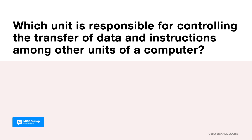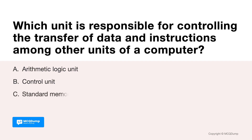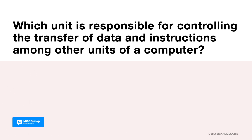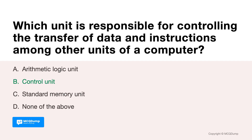Which unit is responsible for controlling the transfer of data and instructions among other units of a computer? Options are: A. Arithmetic Logic Unit, B. Control Unit, C. Standard Memory Unit, and D. None of the above. Answer is B. Control Unit.